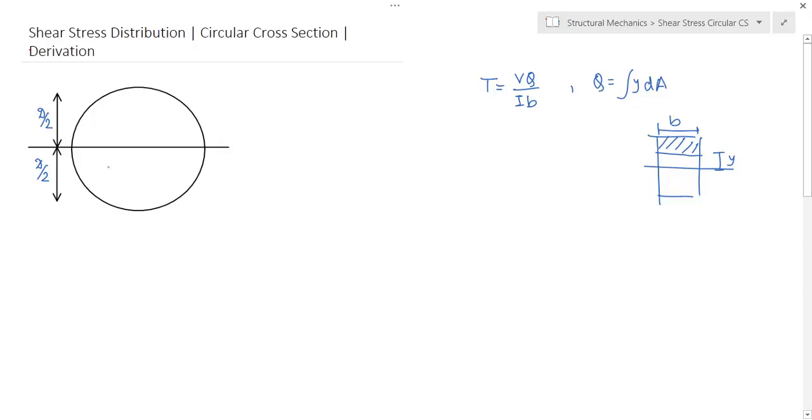But for a circular beam, this B is not constant. For this reason, we have to take a small part at a distance of y. Let us take a small area, dA, at a distance of y from the neutral axis. The breadth is B_y. This is the center. Let this angle be theta.